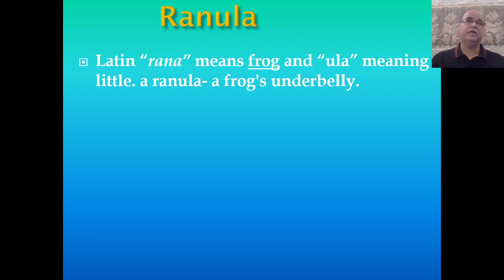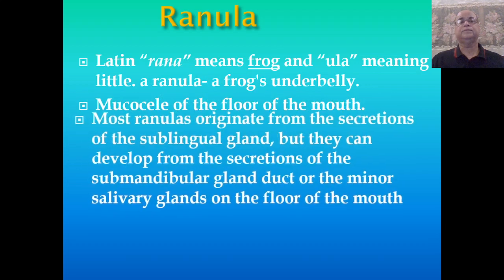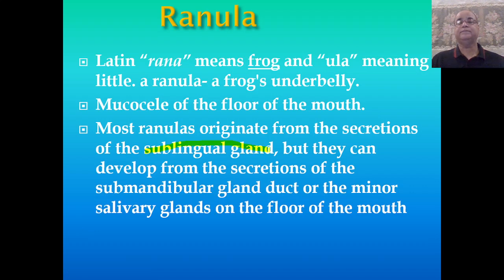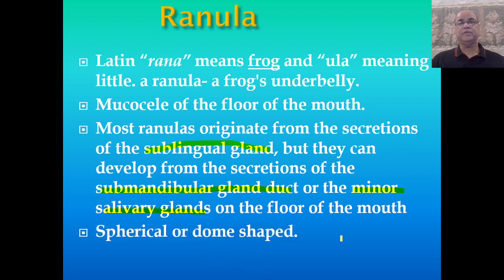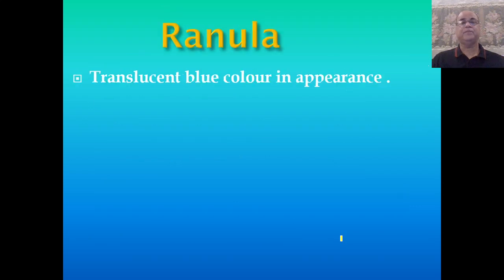Ranula is derived from the Latin word. In Latin, 'rana' means frog and '-ula' meaning little. So this is basically a frog's underbelly — the mucous cyst of the floor of the mouth. Most ranulas usually originate from the salivary glands, mainly the sublingual gland, but they can also develop from the secretions of the submandibular gland duct or minor salivary glands which are scattered on the floor of the mouth. On examination they are spherical or dome-shaped in appearance, with a translucent blue color — also called frog belly appearance. That is basically the origin of its name, the Latin word ranula.